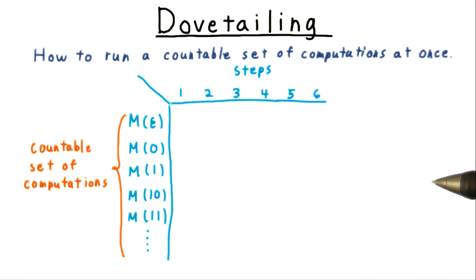Every row in the table corresponds to a computation or a sequence of configurations that the machine goes through for the given input. Simulating all these computations means hitting every entry in the table.